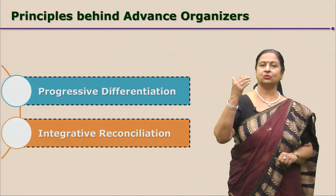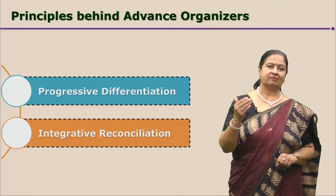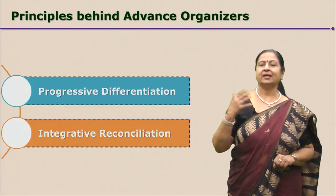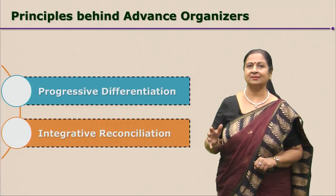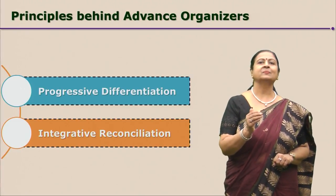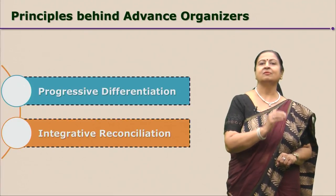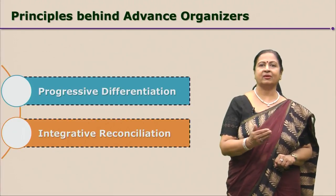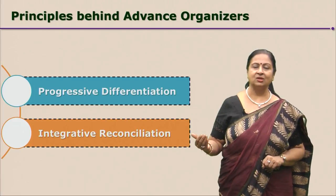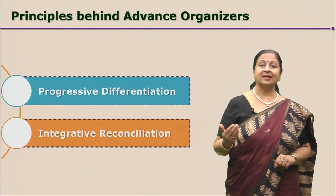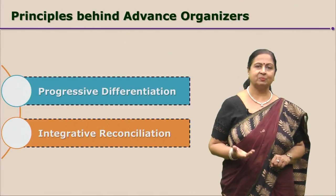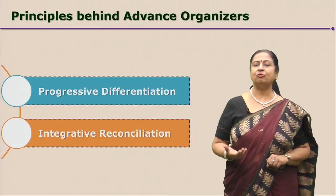First, give the students all-inclusive concepts. For example, plants involve all the plants, animals involve all the animals. Then the next main concept is flowering and non-flowering plants under plants, and vertebrates and invertebrates under animals. All this can be explained very well with the help of graphic organizers, concept maps, and flowcharts.